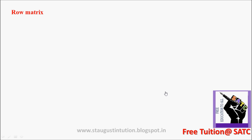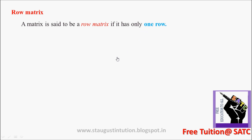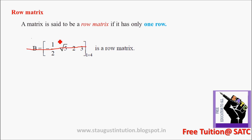Next, Row Matrix. A matrix is said to be a Row Matrix if it has only one row. For example, here there is only one row but 1, 2, 3, 4 — that is 4 columns. So this is a Row Matrix.